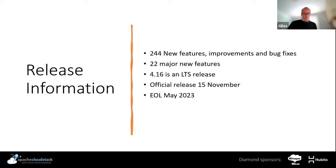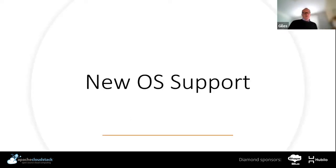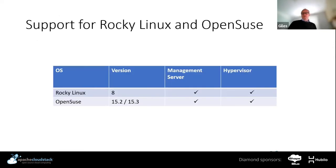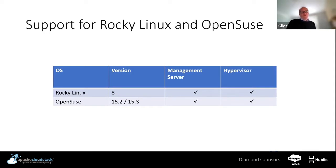Let's start looking at some of the new features. First, we've got support for some new Linux distributions: Rocky Linux version 8, OpenSUSE, and SUSE 15.2 and 15.3 — both on the management server side and as KVM hypervisors. CloudStack had settled on CentOS for a long time, but with the changes that have gone on at CentOS, we've had to look to more and more different distributions. So we've now got a wide range of Linux distribution support.